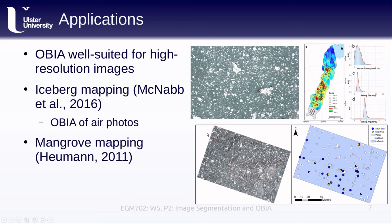There's also another example uploaded to Blackboard showing how OBIA can be used for mangrove mapping, which is particularly difficult at a pixel level because mangroves can look very similar to other land cover types. That study uses WorldView images with a pixel resolution of about 20 centimeters.